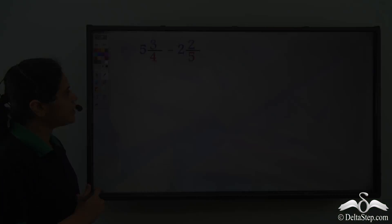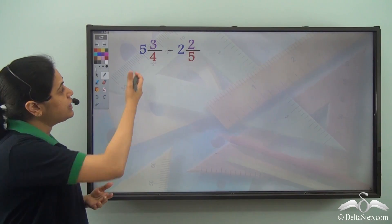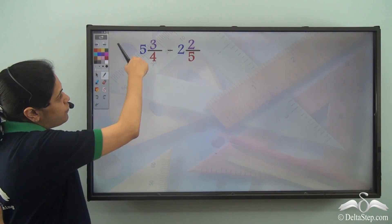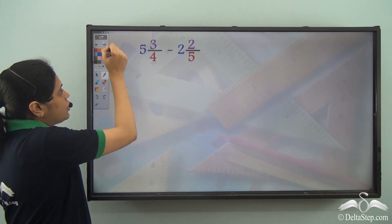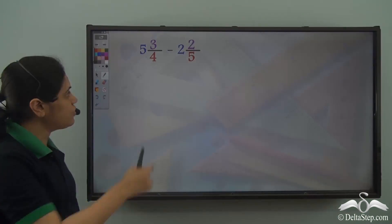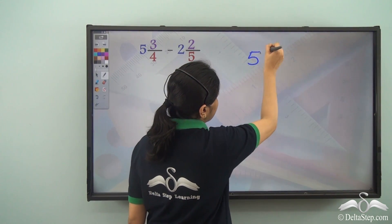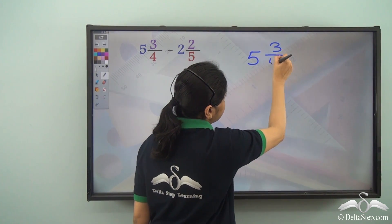Let's see how we can do that. First I need to convert them into improper fractions. So, 5 3 by 4, I need to convert 5 3 by 4, which is a mixed fraction, into an improper fraction.